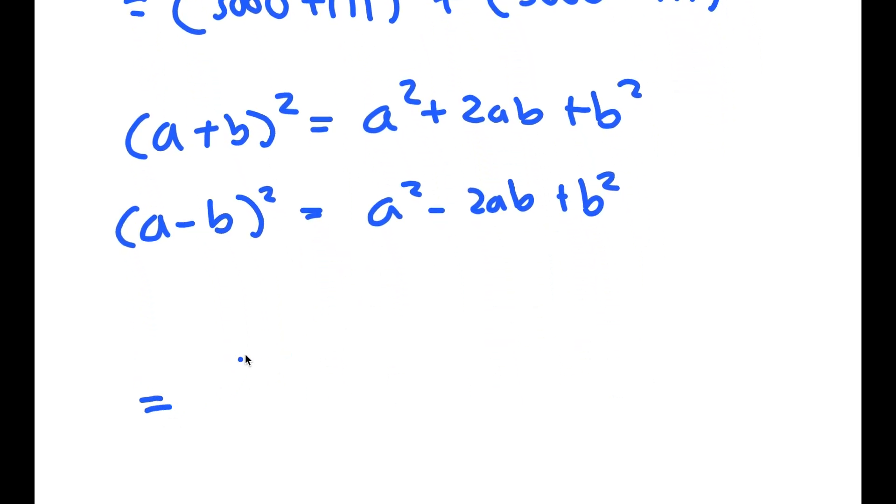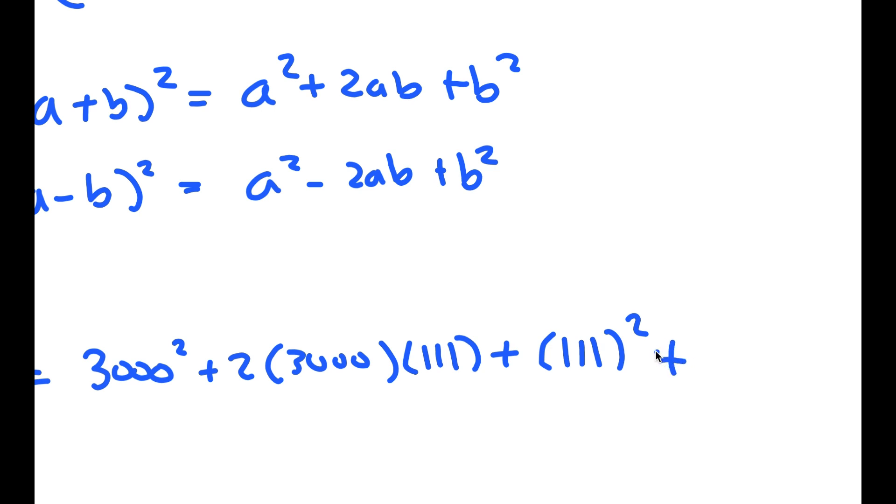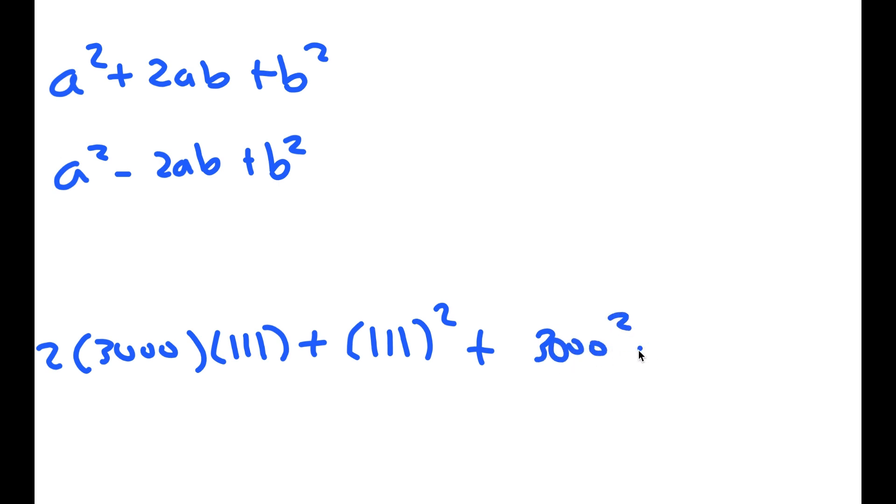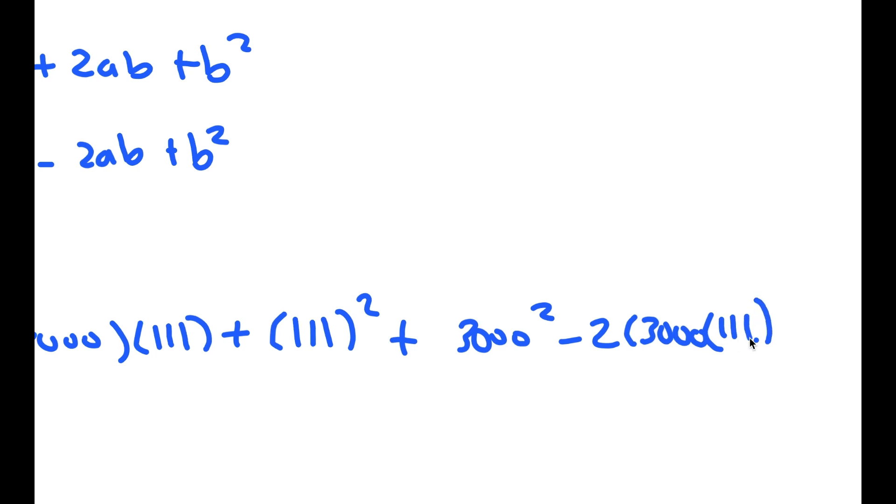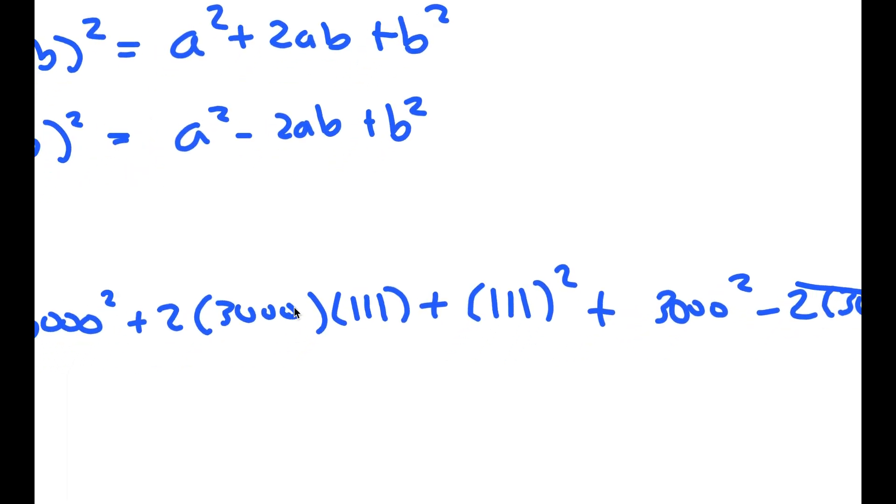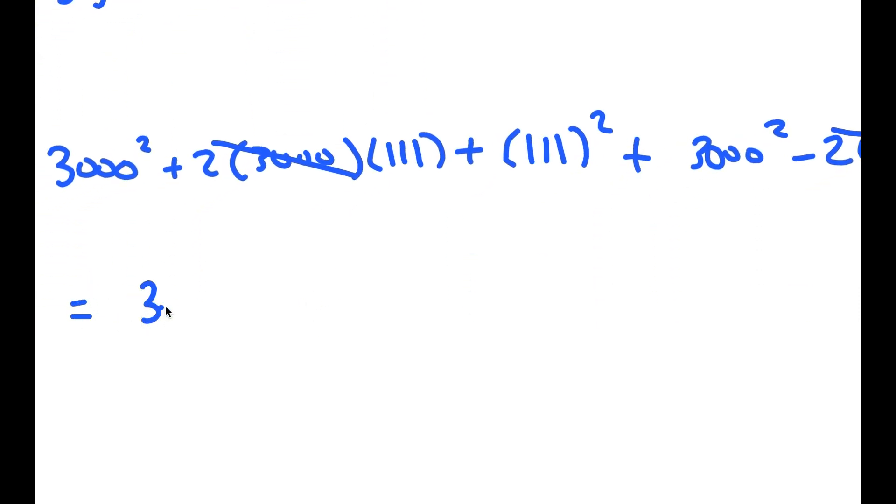So 3,000 plus 111 squared is equal to 3,000 squared plus 2 times 3,000 times 111 plus 111 squared. And now I have this plus 3,000 squared minus 2 times 3,000 times 111 plus 111 squared. So these two, negative 2 times 3,000 times 111 and positive 2 times 3,000 times 111 cancel out. So I'm left with 3,000 squared plus 3,000 squared plus 111 squared plus 111 squared.